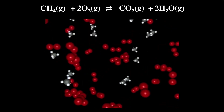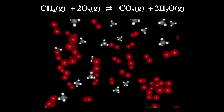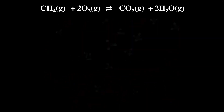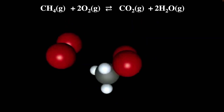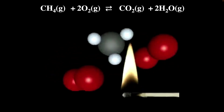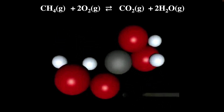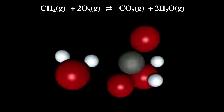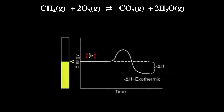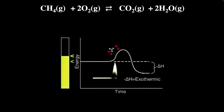Oxygen and methane molecules are mixed together in the same container. They collide, but there is no reaction until a spark or flame is added. To react, the molecules must collide with sufficient energy to break the oxygen-oxygen bonds and carbon-hydrogen bonds so new bonds can form. The additional energy needed to break existing bonds and start the reaction is called activation energy. Initially, the oxygen and methane molecules collide but do not have sufficient energy to react. A flame can supply the activation energy needed to start the reaction.